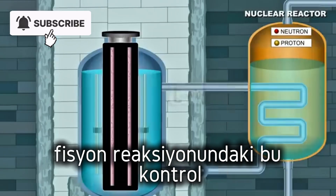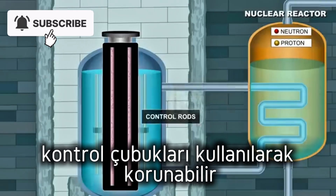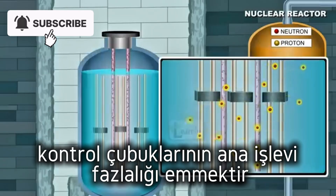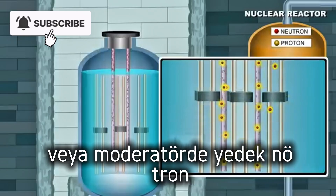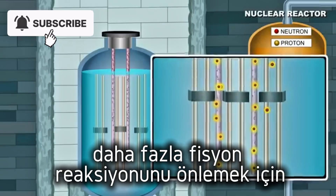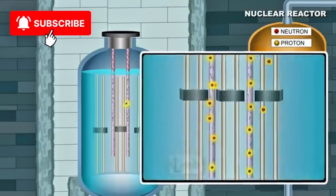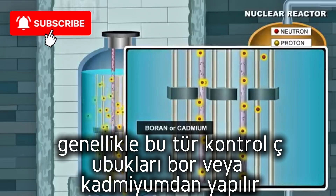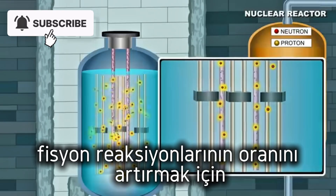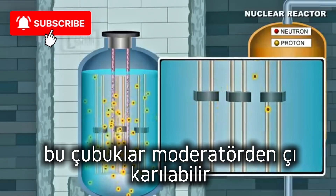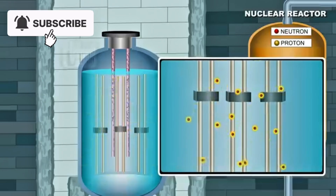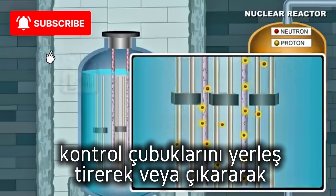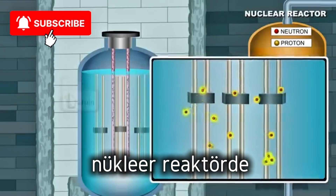This control on the fission reaction can be maintained using control rods, which are the third and most prominent part of a nuclear reactor. The main function of the control rods is to absorb any excess or spare neutrons in the moderator in order to prevent any further fission reactions. Usually, such control rods are made of boron or cadmium. To increase the rate of fission reactions, these rods can be removed from the moderator, and a steady output of energy can be maintained by inserting or removing the control rods.